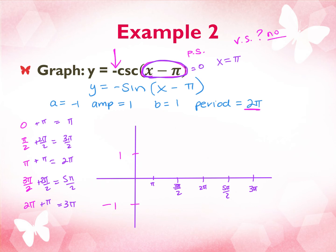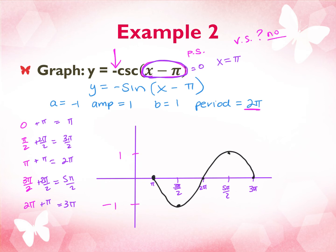We're going to graph sine, but upside down. I normally start at zero — I still start at zero but at π because of the phase shift. I normally go up to the amplitude, but this is negative so I go down, up, up, down, and plot my curve. Now everywhere there's an x-intercept, an asymptote goes there.